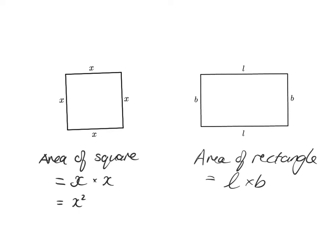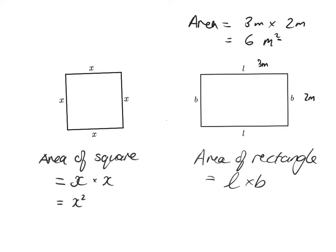Moving on to area — remember, area is basically how much surface a shape takes up. So if you had to paint the whole thing, how much space does it cover? The area of a square is this side multiplied by this side, so x times x, which is x squared. The area of a rectangle is the length multiplied by the breadth. For example, a rectangle that is 3 meters long and 2 meters wide has an area of 3 × 2 = 6 square meters — squared because we're dealing with area.